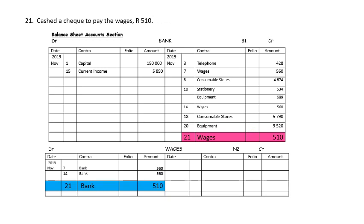We also cashed a cheque to pay the wages again — same transaction as the previous one. Spending money means bank will decrease on the credit side. You are spending on wages, which means wages will increase on the debit side. Double entry principle — every debit needs a credit.